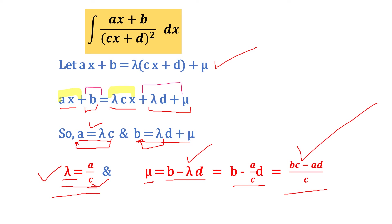Let's take a quick recap on the process. First, you put ax + b = λ(cx + d) + μ. Equating the x terms and the constant terms separately, you get the values of λ and μ.